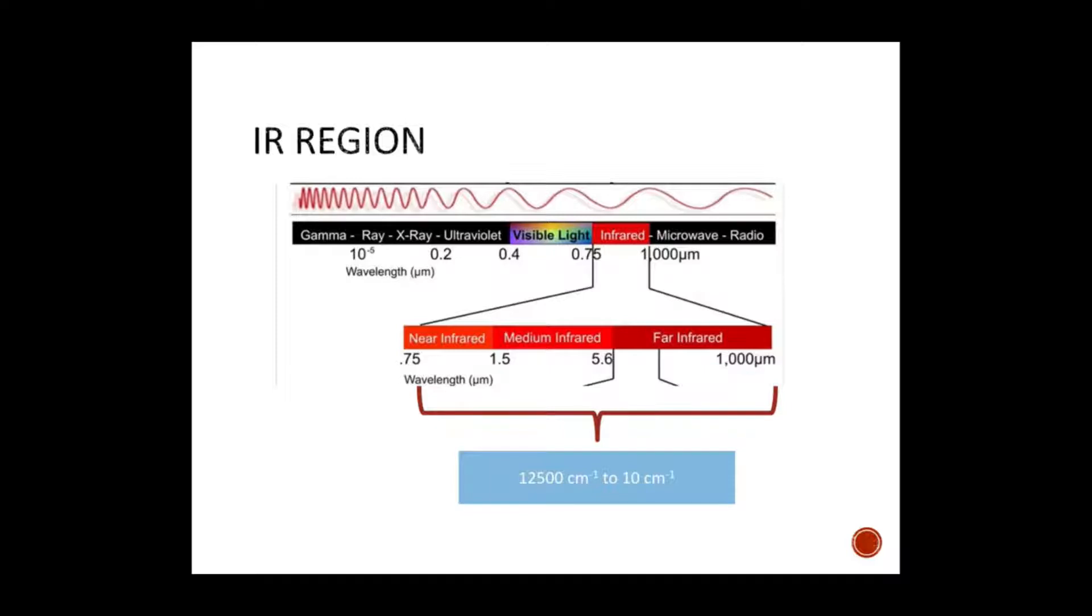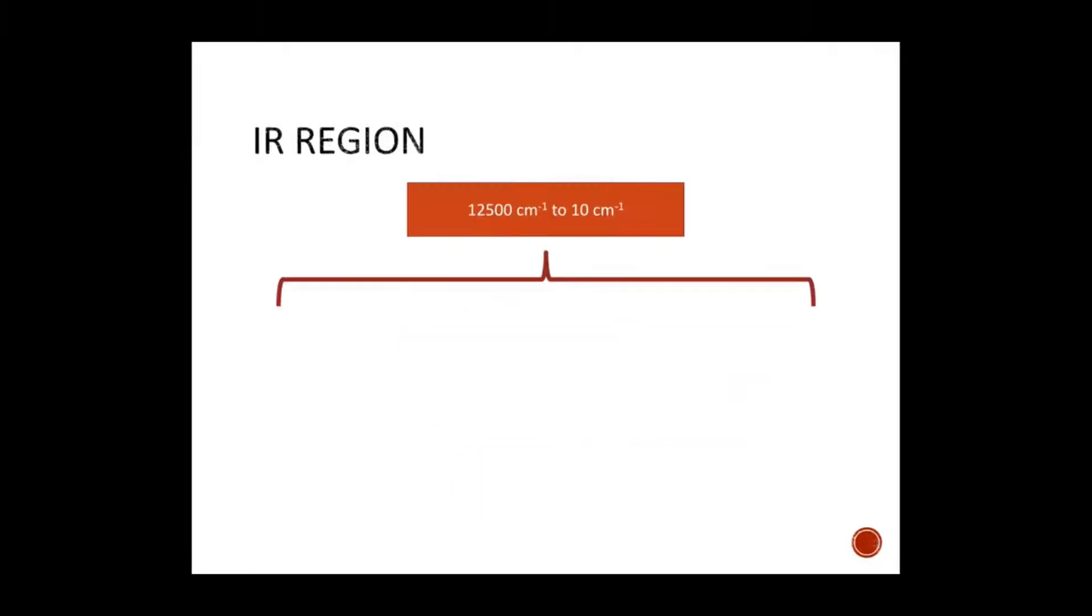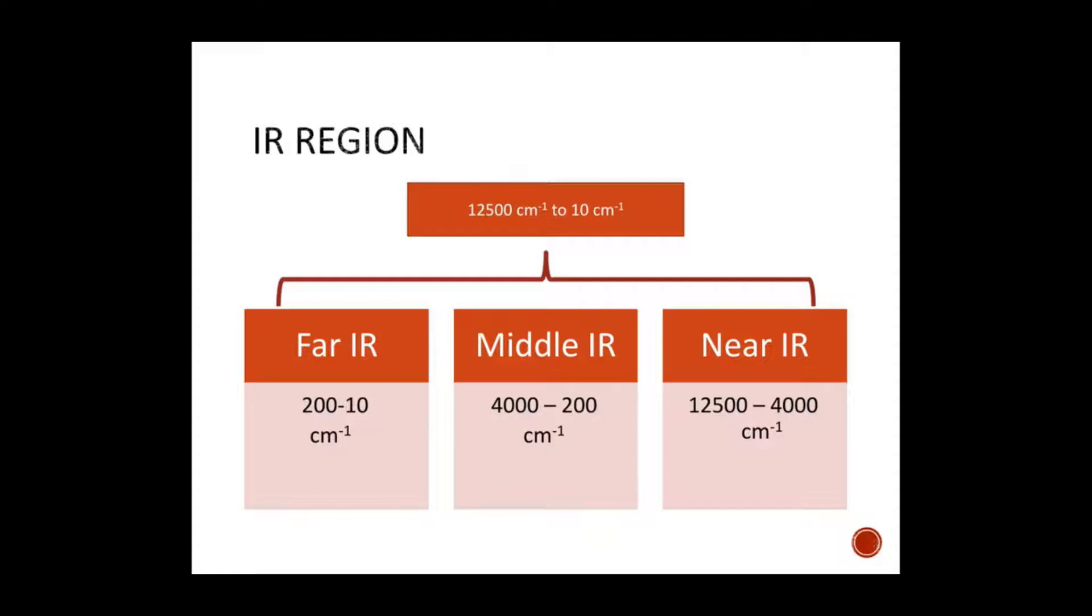The infrared radiation ranges from 10 cm⁻¹ to 12,500 cm⁻¹ and it is classified into 3 regions.